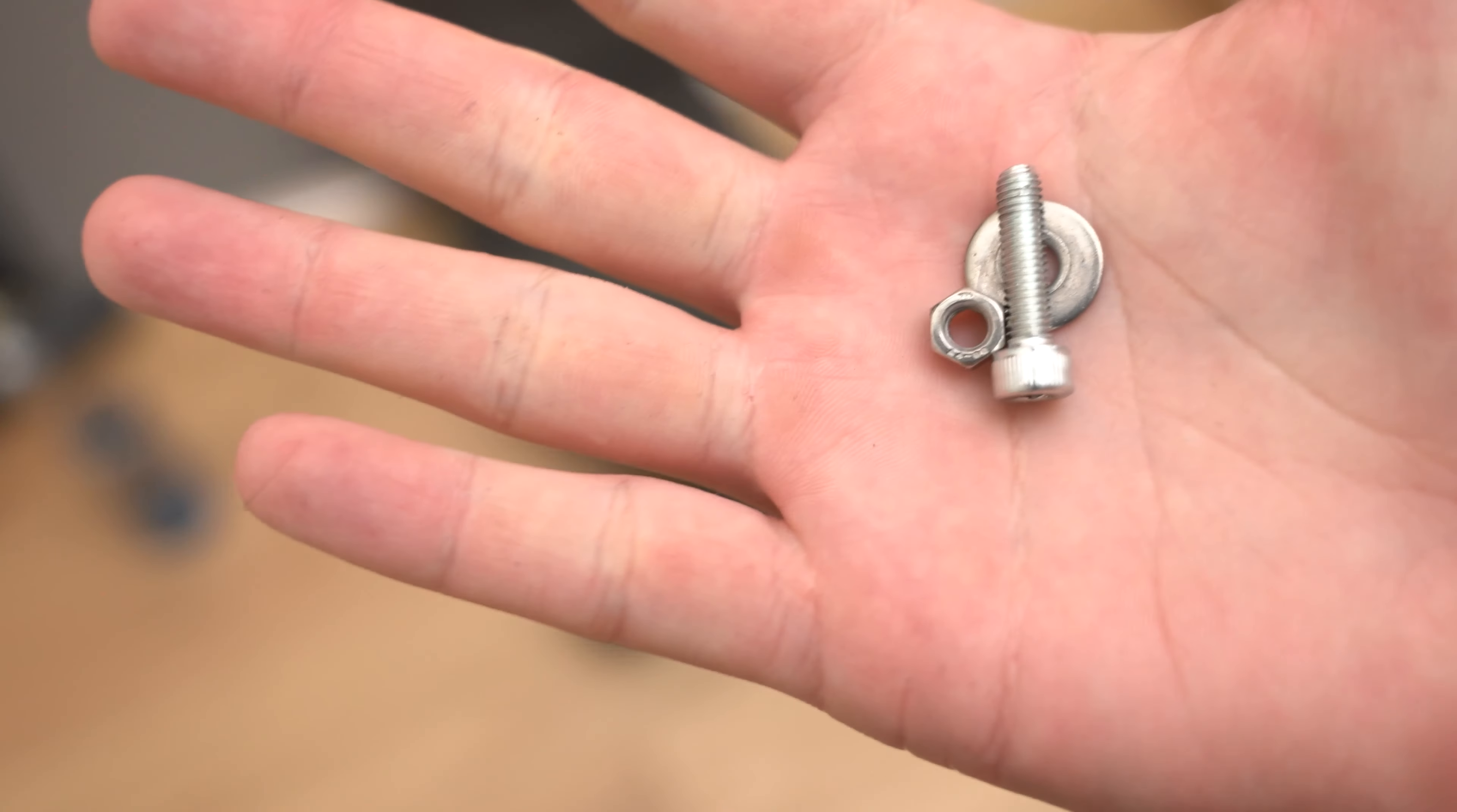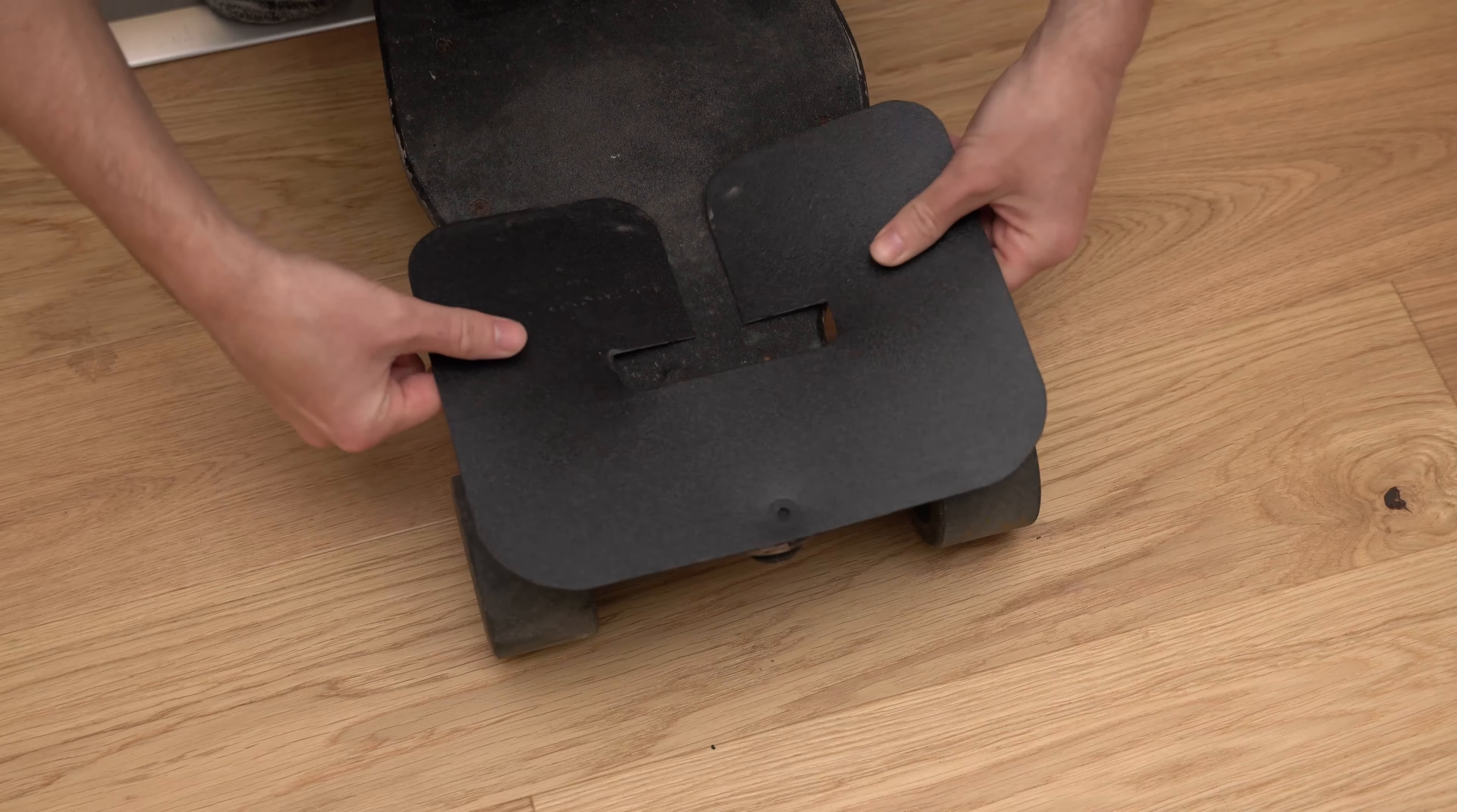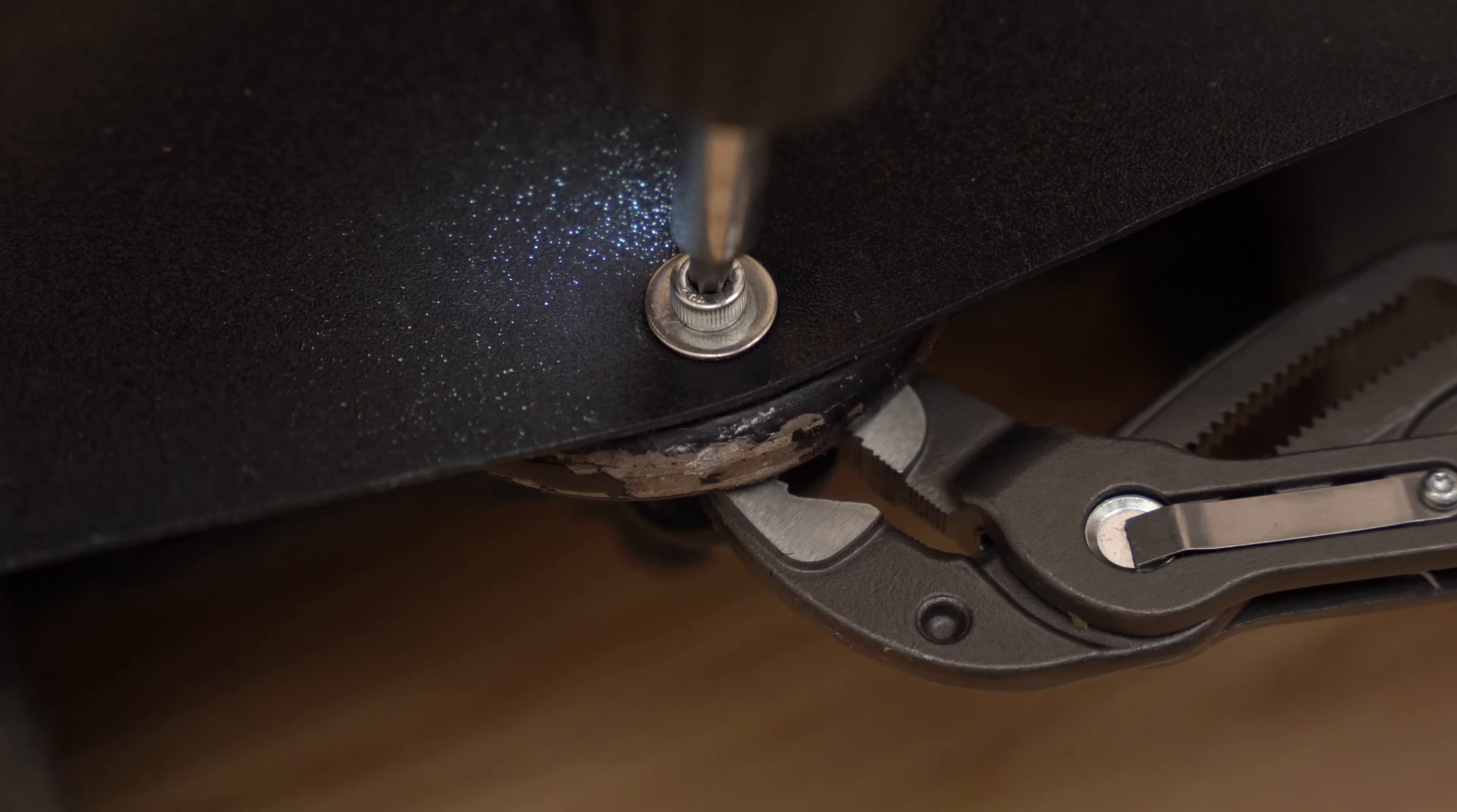I opted for securing the guards with a screw, but if you don't want to drill a hole in your board, you can attach your guards by tying a string around your trucks. Just make sure it is secure before you ride.